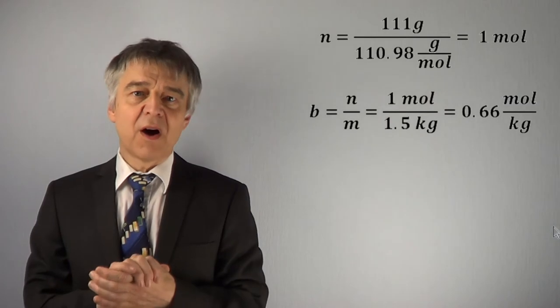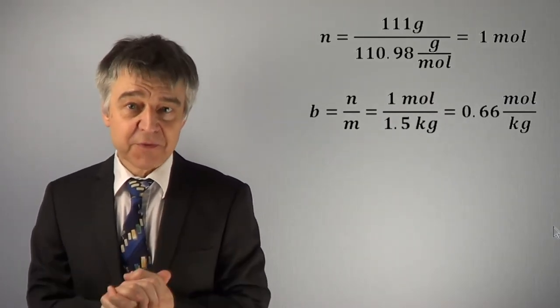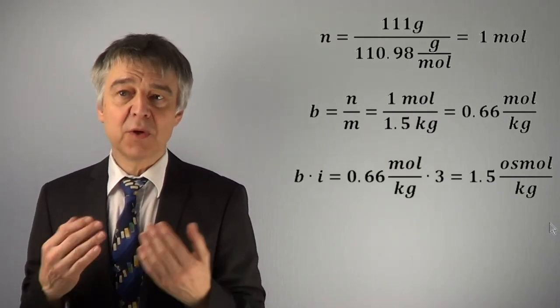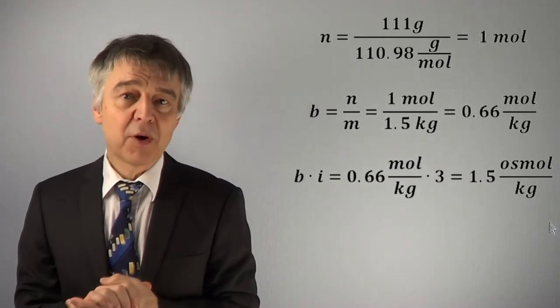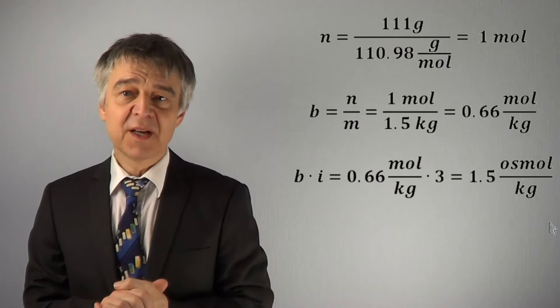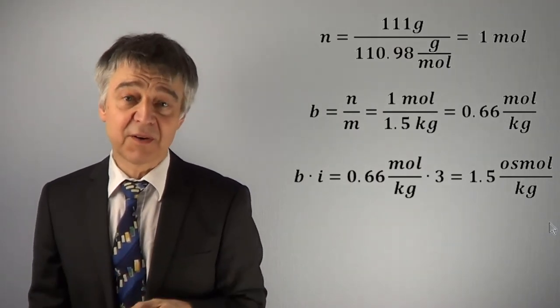With osmolality, we additionally take into account Van't Hoff factor i. Osmolality is equal to b times i times 3 equals 1.5 osmol per kg.